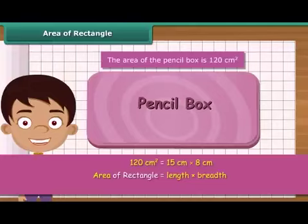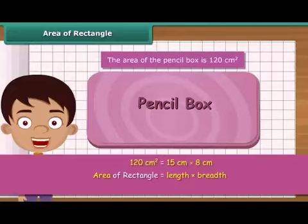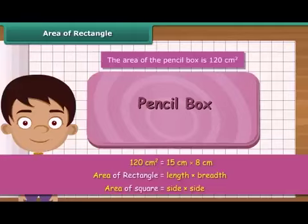Since a square is a rectangle whose length and breadth are equal, the area of a square is obtained by multiplying its side by its side.